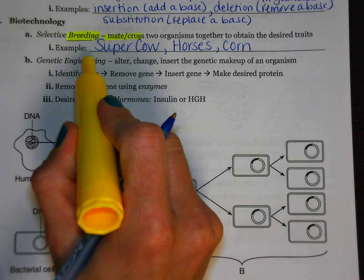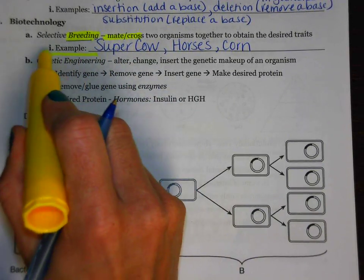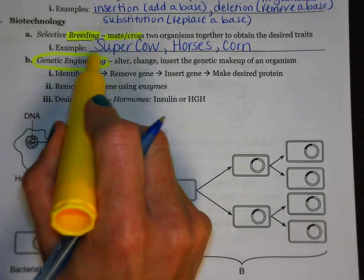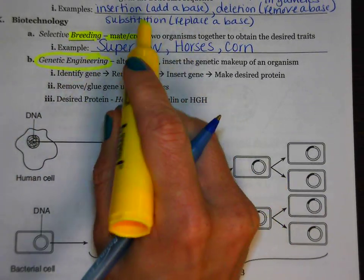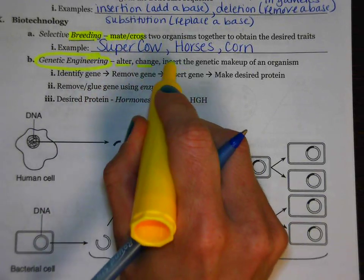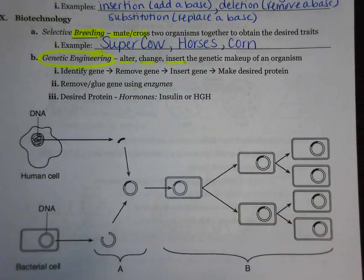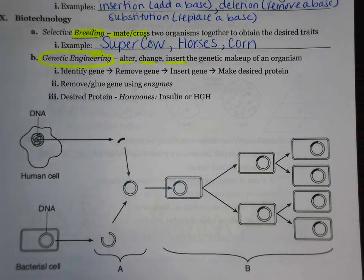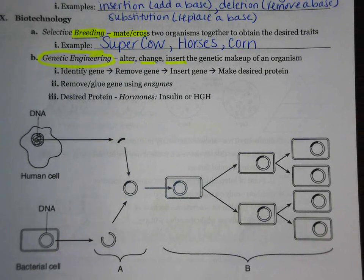Next up, we have the term genetic engineering. Genetic engineering has some key words associated with it: alter, change, insert. Alter and insert are really the words you see most frequently. What we're trying to do is find a gene that we're interested in and insert it into another organism.